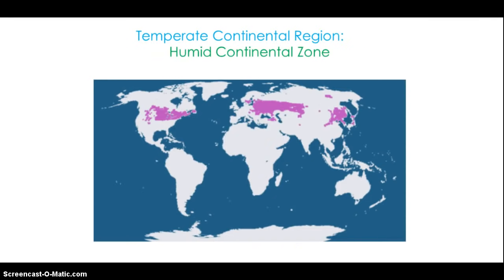Humid continental climate is found in the interior of continents, mainly in the northern hemisphere, since there are no large land masses at the same latitude in the southern hemisphere. It is one of the few climates with four different seasons: warm and humid summers, cool and dry falls, cold and harsh winters, and warm and wet springs. The humid continental zone has a wide range of temperatures, meaning low cold temperatures and high warm temperatures.